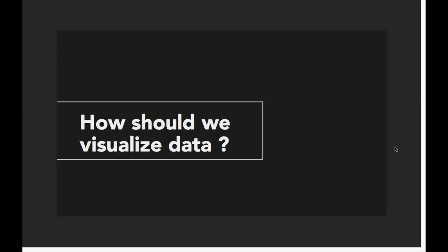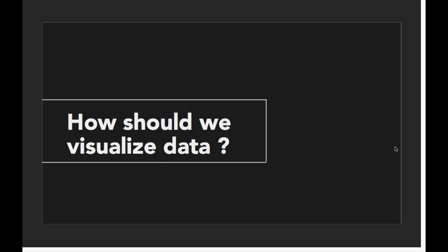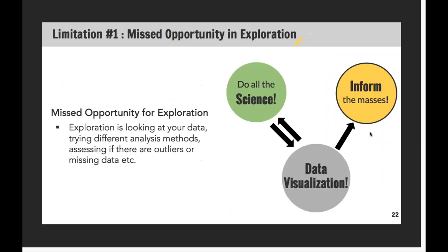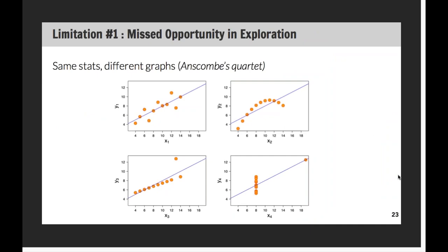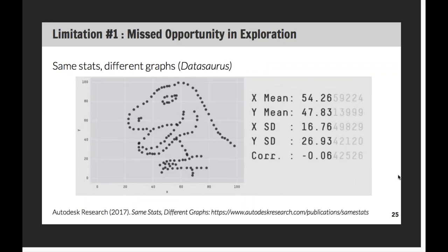There's a question asking for the name of the descriptive graphs with the quartet. This one is called Anscombe's Quartet — a very famous example generated by a statistician, very easy to find with a quick Google search. The one with the dinosaur, which is new, is called Datasaurus. The link is the Autodesk research 'same stats, different graphs.' It's a more modern and fun example highlighting the limitations of just looking at summary statistics.